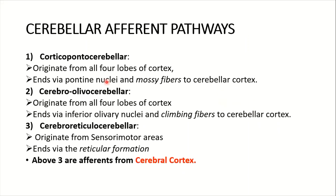Now talking in a bit more detail about the important cerebellar afferent pathways. Pathways number one, two, and three come from the cerebral cortex as efferents. Number one is the corticopontocerebellar pathway, originating from all four lobes of the cortex — frontal, parietal, temporal, and occipital — and it ends via pontine nuclei and mossy fibers to the cerebellar cortex.